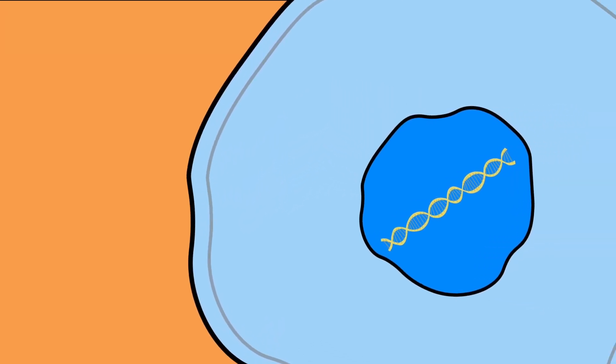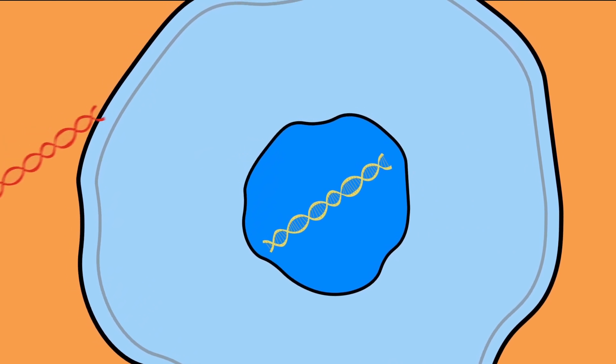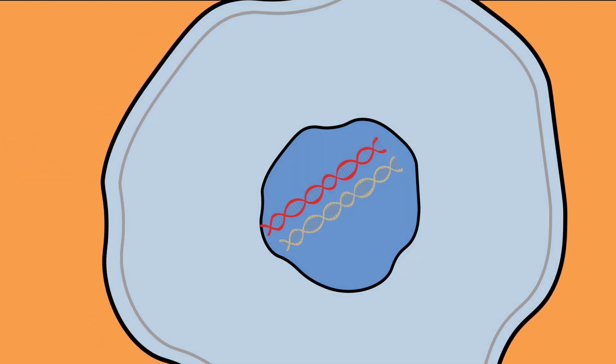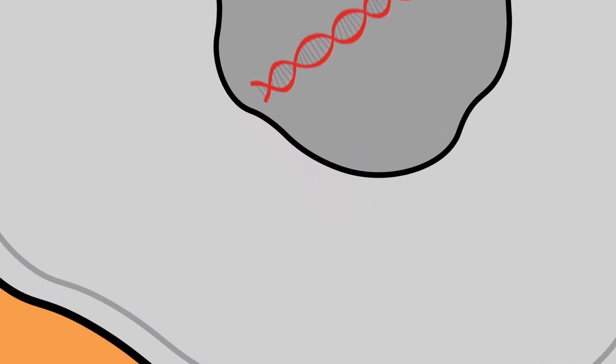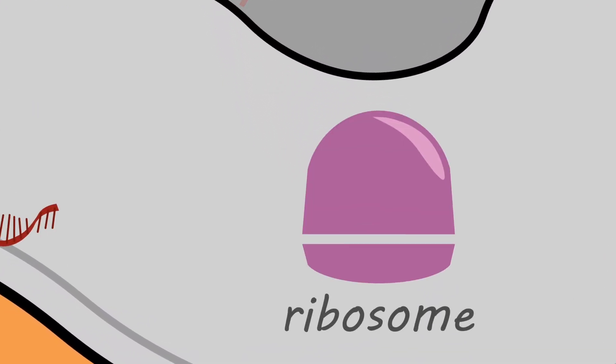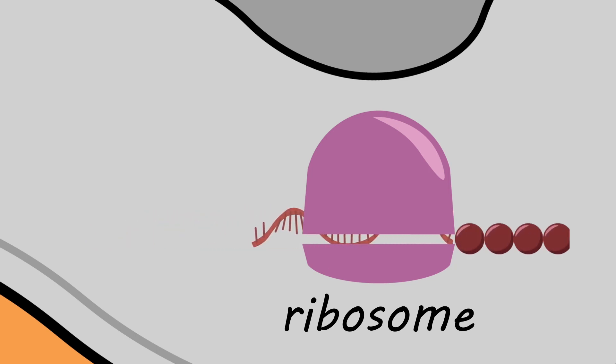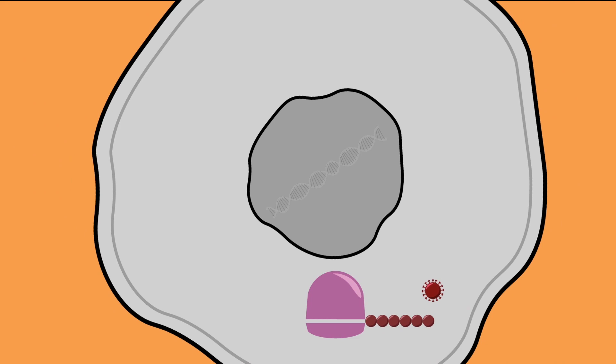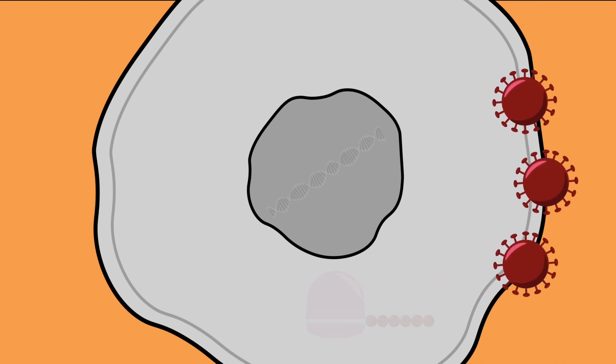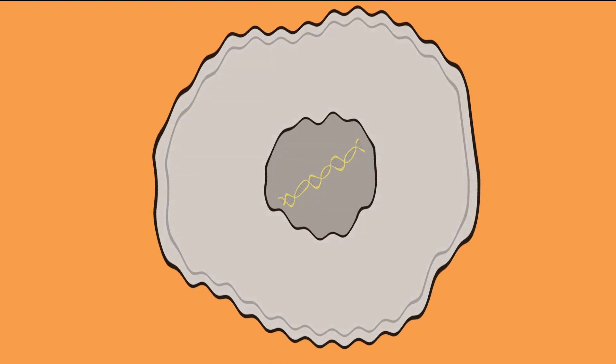Regardless of the strategy viruses use to enter the cell, the process that follows is the same. The viral genetic material ends up at the ribosomes, the cellular machinery that will translate the viral genetic material into proteins. These come together to form new viruses, which can leave the cell either by pushing through the membrane or by lysing it, which can eventually lead to cell death.